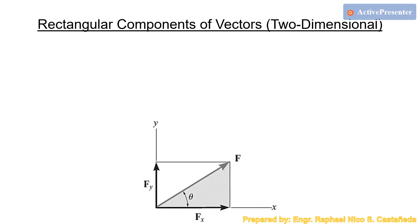Applying the concept of the parallelogram law, the components Fy and Fx must be concurrent at a point. Drawing parallel lines — one parallel to Fx and one parallel to Fy — the resultant is their sum. So in vector form: Fy + Fx equals vector F by the parallelogram law of addition.